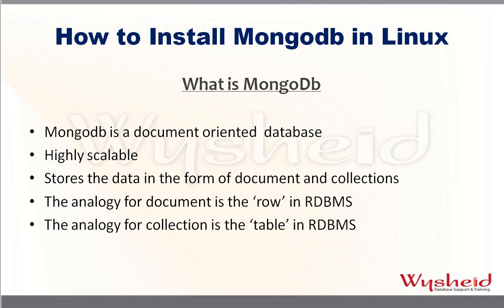MongoDB stores data in the form of documents and collections. For RDBMS folks, a document is analogous to rows in a relational database management system. The analogy is: documents correspond to rows, and collections are equivalent to tables. So a MongoDB database consists of many collections, which are equal to tables, which in turn consist of documents, which are nothing but rows.